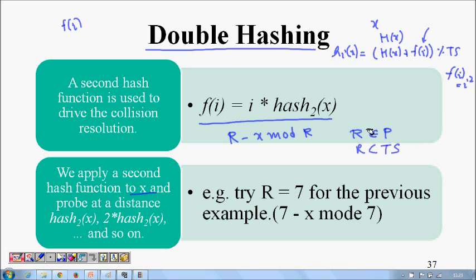In this example, we are taking h(x) as x mod 10, and h2(x) will be 7 - (x mod 7). We choose 7 because 7 is a prime number and it's less than the table size, so it should work fine.